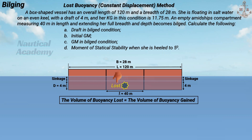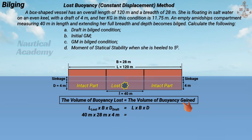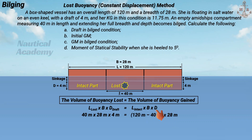In this scenario, this is the lost part, and on both sides are the intact parts of the vessel. To calculate the volume, we multiply the length by the breadth and then by the depth or draft. The length used to calculate the volume of buoyancy lost is the length of the flooded compartment — 40 meters. Since the compartment extends across the vessel's full breadth and depth, the breadth is 28 meters and the depth corresponds to the ship's draft of 4 meters. The length used to calculate the volume of buoyancy gained is the length of the intact part: 120 meters minus 40 meters = 80 meters. The breadth remains 28 meters.